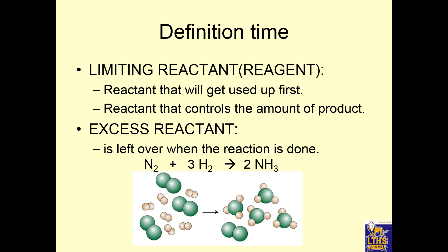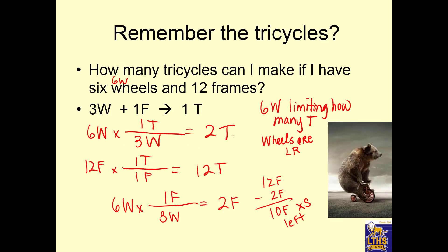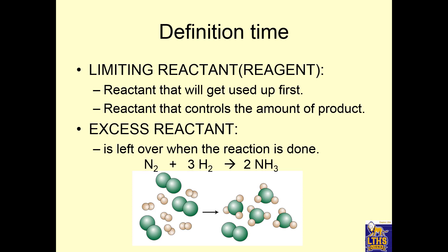Definition time. A limiting reactant is a reactant that will get used up first in a chemical reaction. It is also the reactant that controls how much product you're going to get — just like the wheels told us we're getting two tricycles. An excess reactant is left over when the reaction is done.